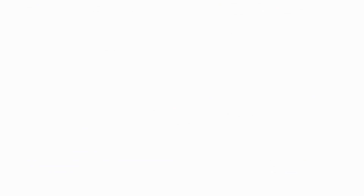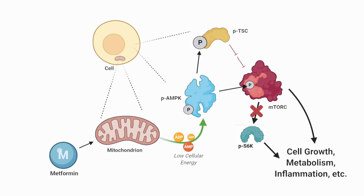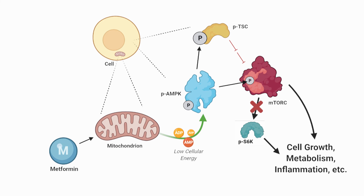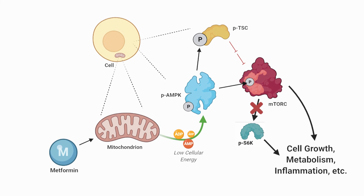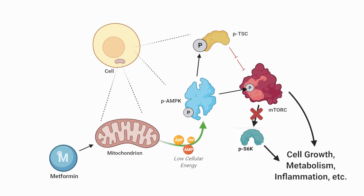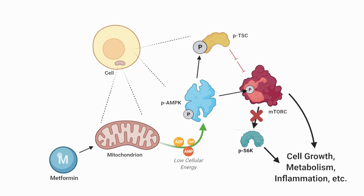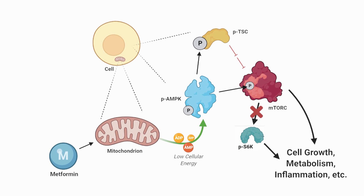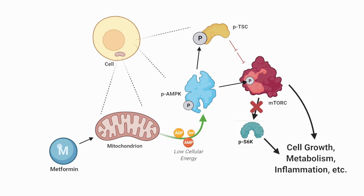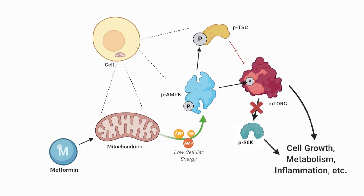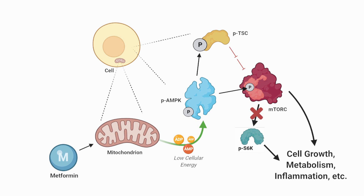Ultimately this data implies metformin, by directly inhibiting mitochondrial energy production, inhibits mTORC signaling — including growth, metabolism, inflammation, and other outcomes — through phospho-AMPK, which phosphorylates TSC and raptor, which inhibit mTORC separately. Phospho-TSC inactivates a protein called REB which usually activates mTORC, and phospho-raptor inactivates mTORC directly. The most profound effects are through raptor however.